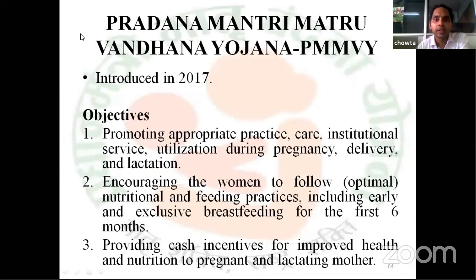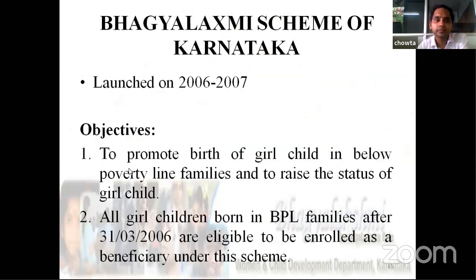Introduced in 2017, the objectives include promoting appropriate practices, care, and institutional service utilization during pregnancy, delivery and lactation; encouraging women to follow nutrition and feeding practices including early and exclusive breastfeeding for the first six months of life; and providing cash incentives for improved health and nutrition for deprived and lactating mothers. Bhagya Lakshmi Scheme of Karnataka was launched in 2006–07. Objectives are to promote the birth of the girl child in below poverty line families and raise the status of the girl child. All rural children born in BPL families after 31st March 2006 are eligible to be enrolled as beneficiaries.